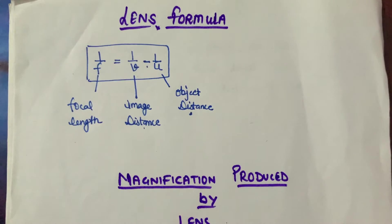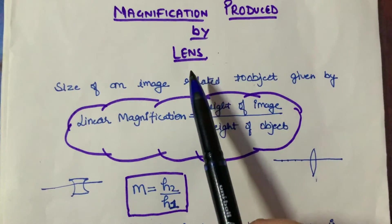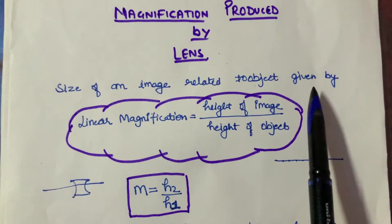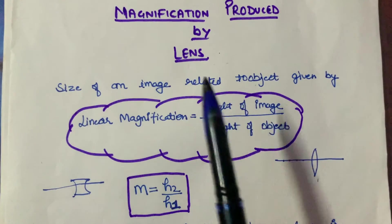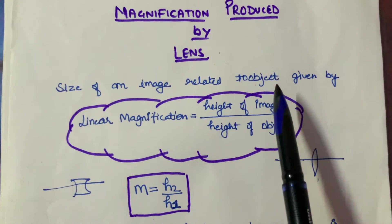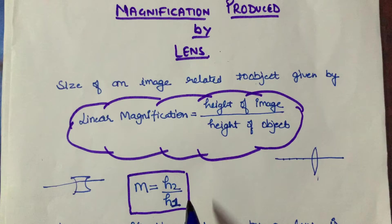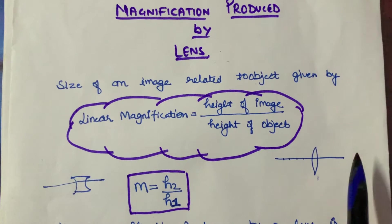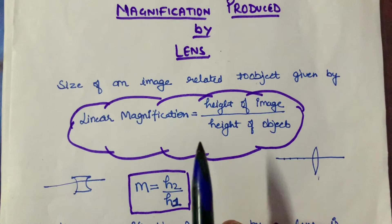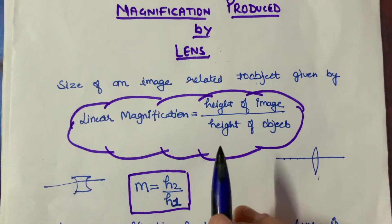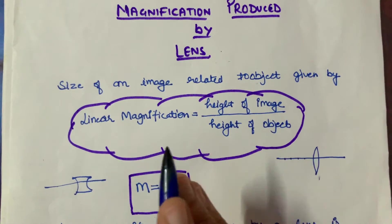Similarly, we have another topic: magnification produced by a lens. How is the size of the image compared to the size of the object? It will totally depend on where our object is placed. If the object is at the centre of curvature, then the image is exactly the same size. The size might be equal, or even bigger, or smaller.